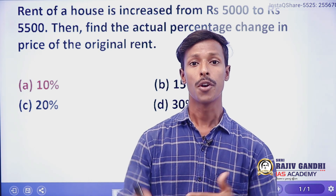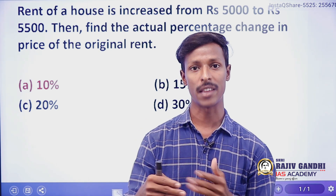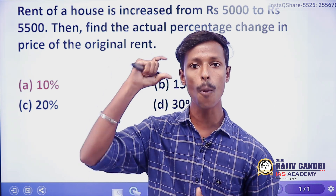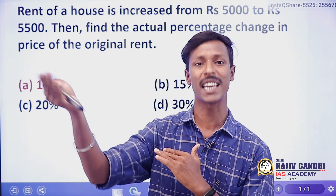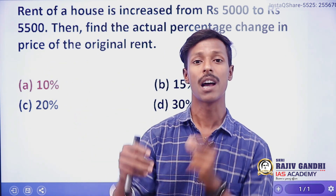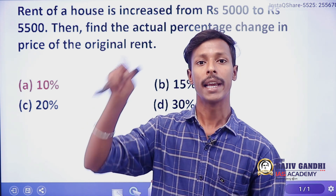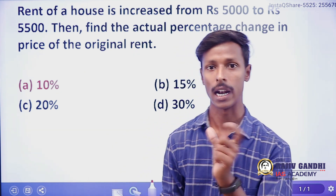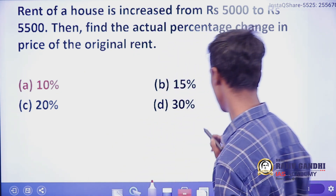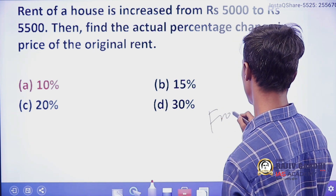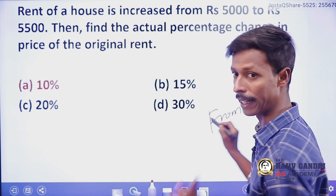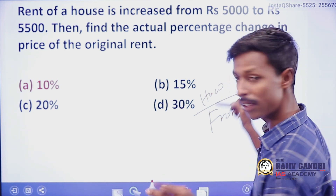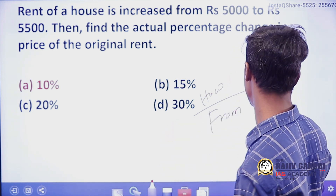What is the formula? The initial value is the denominator. How much is every increase or every decrease — that is the numerator. Into 100 — how much is 100? Percentage. So: from value is the denominator, the difference is the numerator, multiplied by 100.